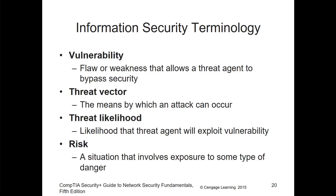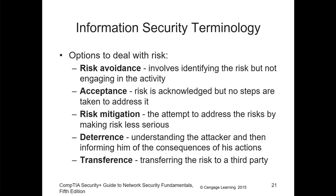Other important terms: vulnerability, threat vector, threat likelihood, and risk. Risk is a situation that involves exposure to some type of danger. A risk assessment is a calculated assessment to see the likelihood of an event occurring. Threat likelihood is the likelihood that a threat agent would exploit a specific vulnerability. Threat vector is the means by which an attack could occur. Vulnerability is a flaw or weakness that allows a threat agent to bypass typical security.